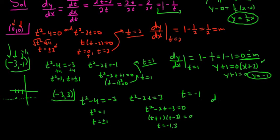So again, now we find dy/dx. When t is equal to negative 1, this is 1 minus 1 over negative 1, so it's 1 plus 1, so it's 2. So m is 2 in this case.